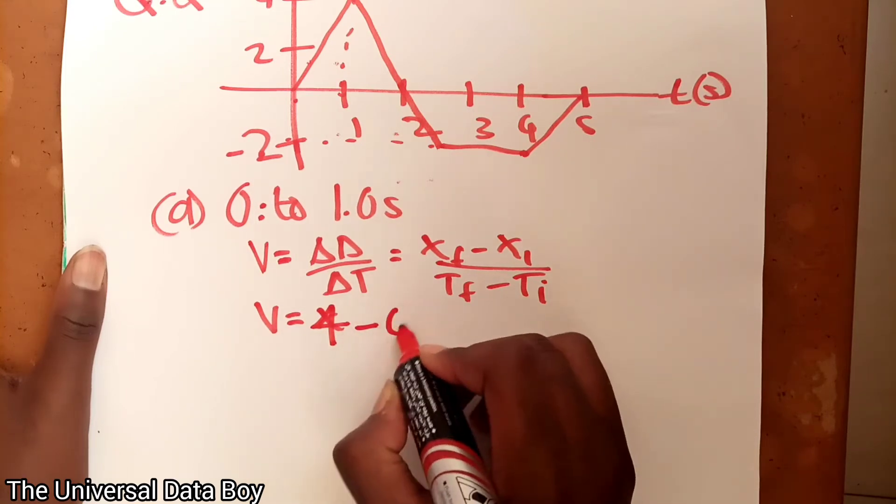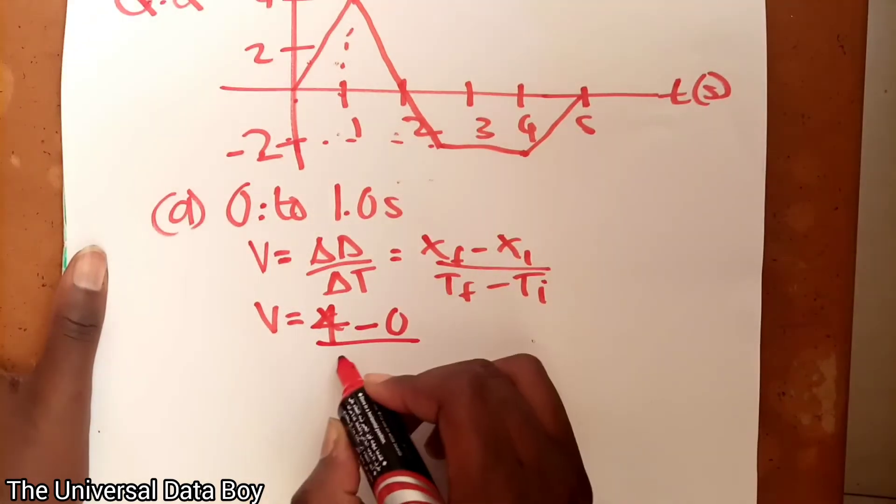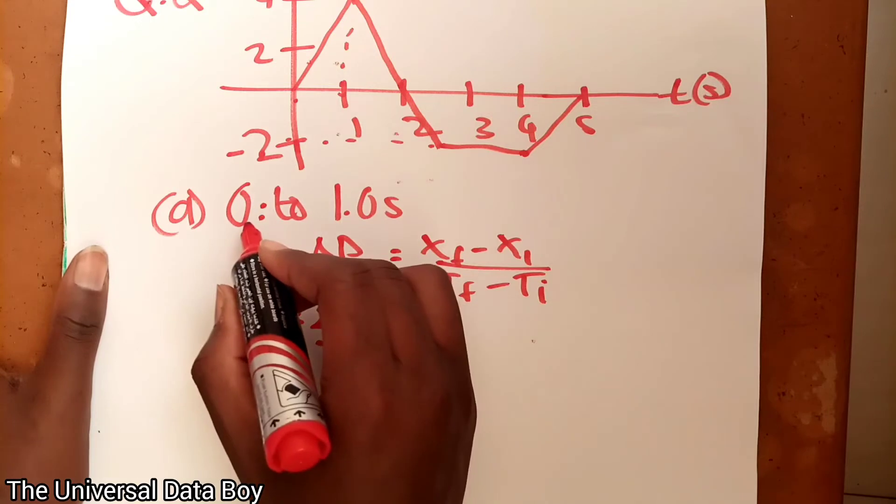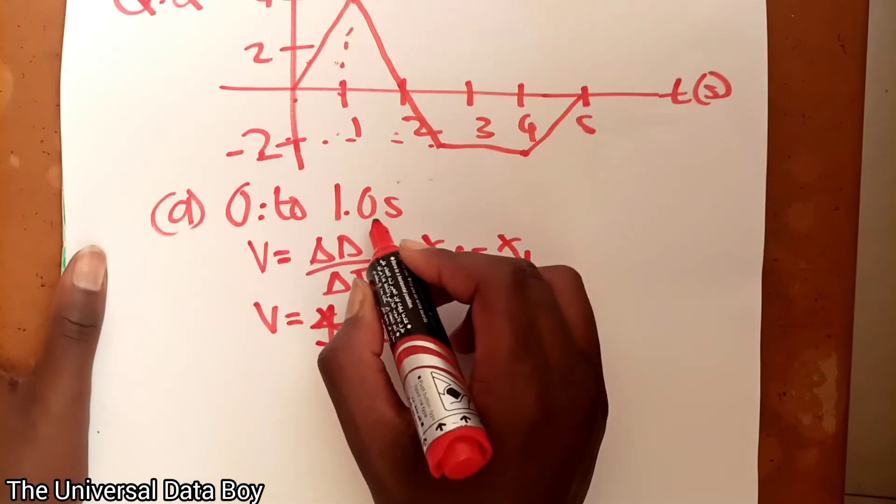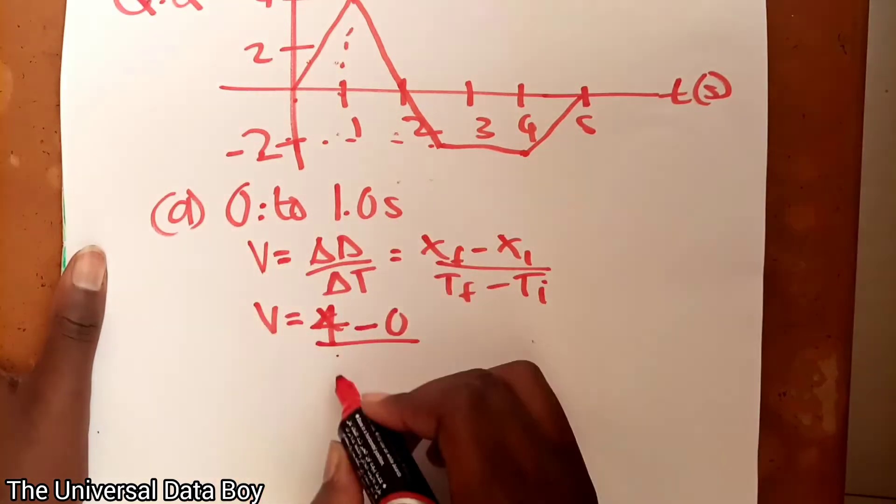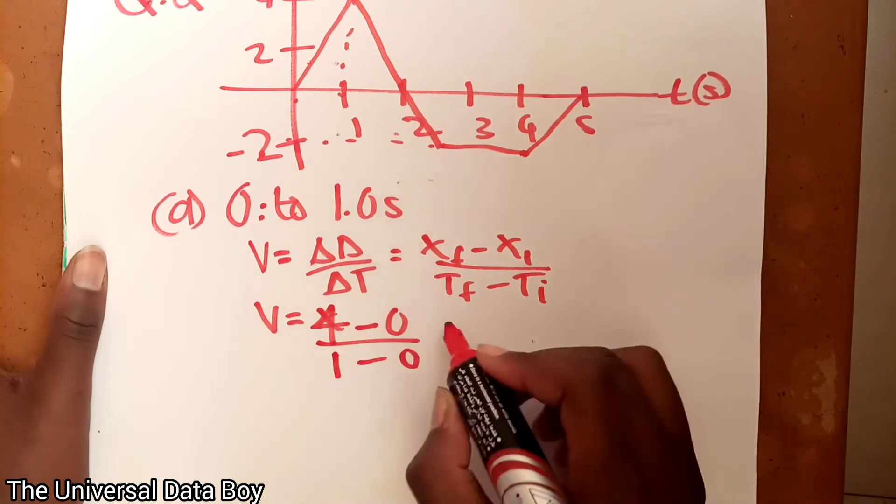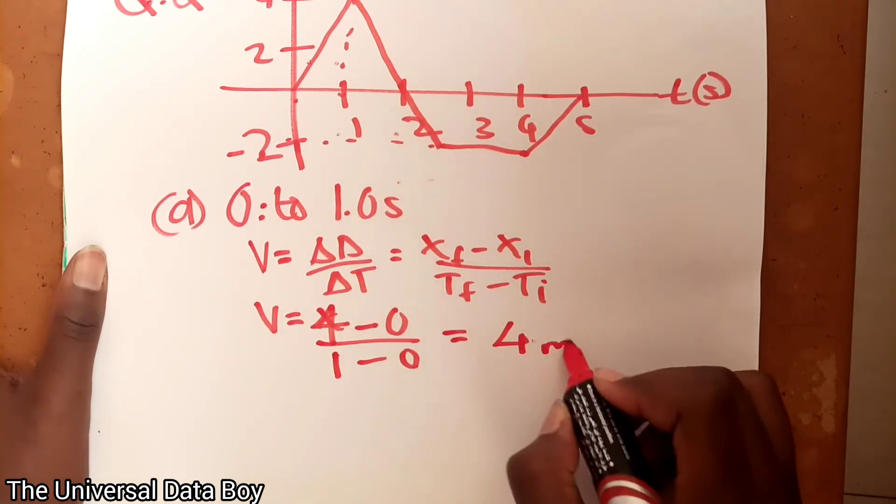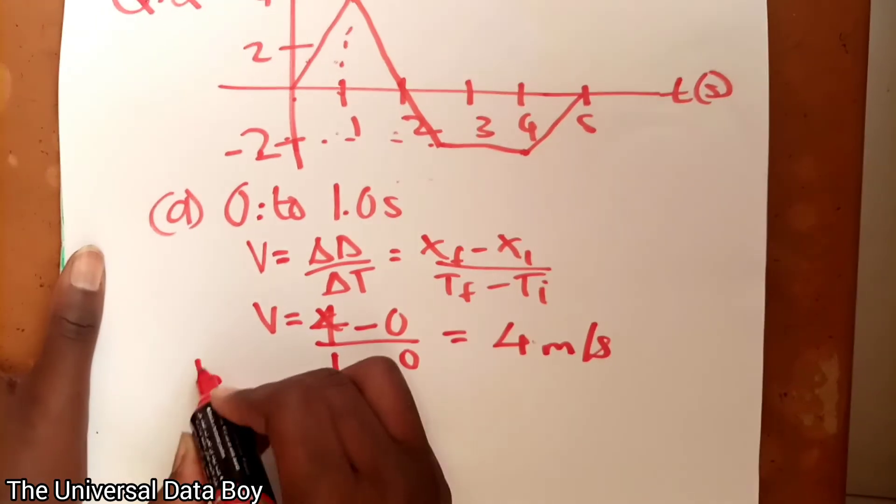Distance initial is 0, initial distance is 0. Then the time we are coming from, we are coming from 0 to 1. So the final time is 1, initial is 0. So the velocity here will be equal to 4 meters per second. Then we go to b